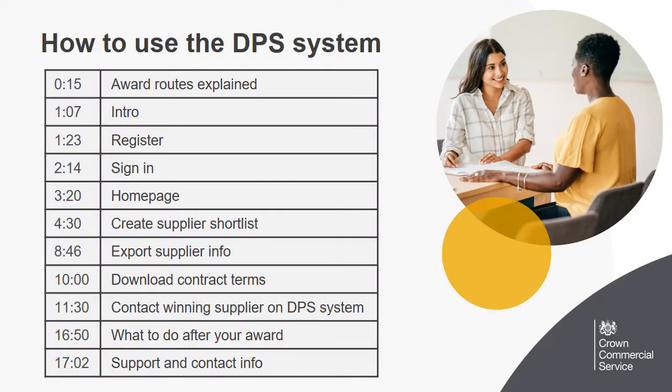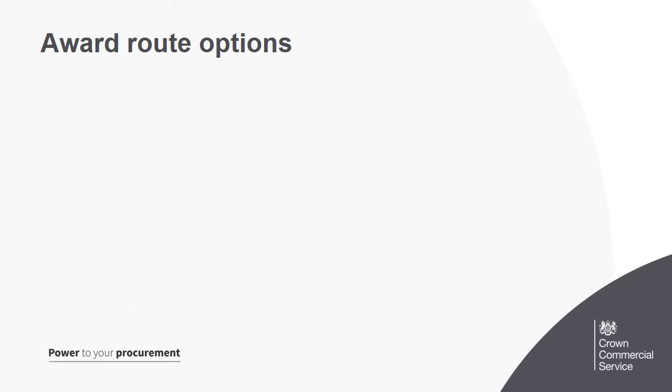If you want to skip ahead to any particular section, pause here and use the timings on screen. There are two ways to run your further competition: a standard award or a rapid award.